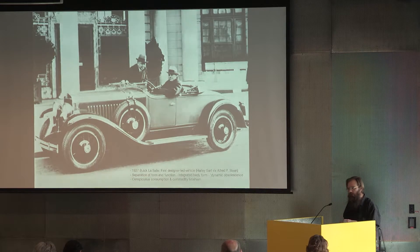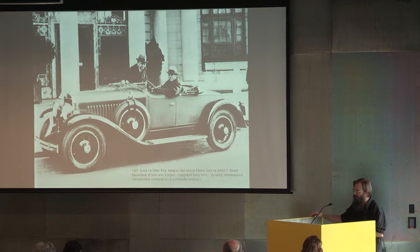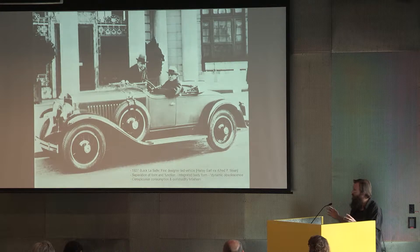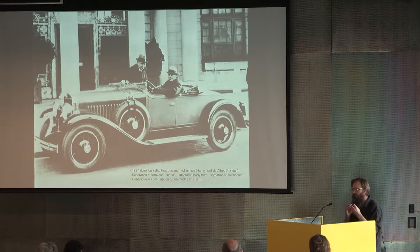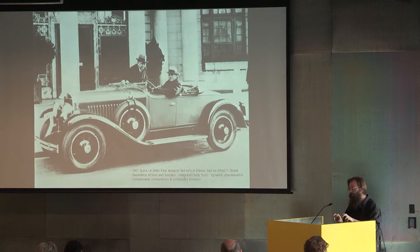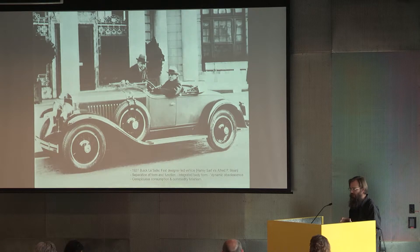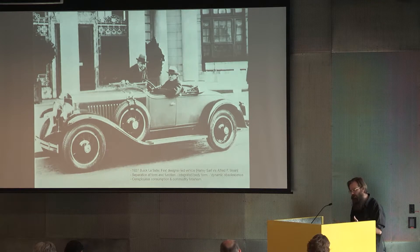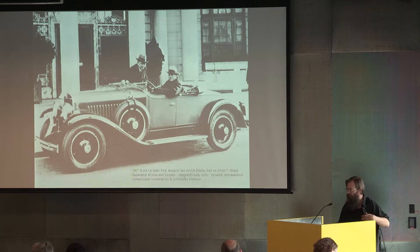At a critical point in time — and a few people have talked about this — in 1927 with the Buick LaSalle, Alfred P. Sloan commissioned Harley Earl to integrate the aesthetic of the vehicle into a form that was sleek and beautiful with dynamic lines. In doing this, he separated the form from the function of the vehicle, and that allowed Sloan to introduce what he terms in his book 'dynamic obsolescence' — where you can re-skin over a functional platform to facilitate fashion cycles, which some would argue built a culture of conspicuous consumption and commodity fetishism.